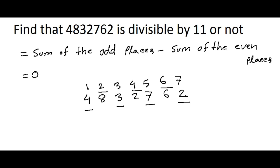Now, the sum of the odd places is 4 plus 3 plus 7 plus 2 minus sum of the even places. So, it is 8 plus 2 plus 6.